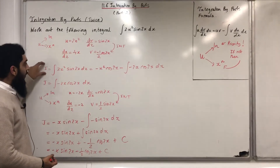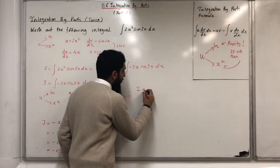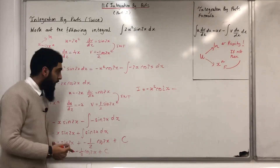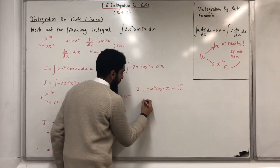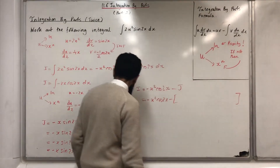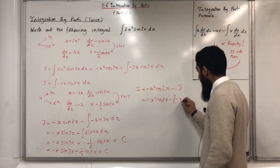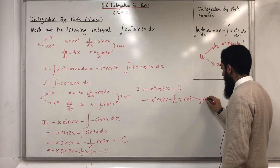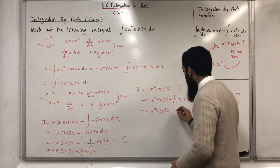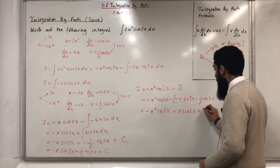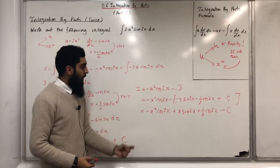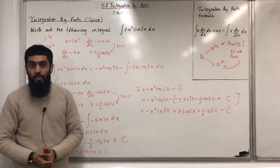I can go back to my expression for i, which is this over here. I can write i equals minus x squared cos 2x minus j. Substituting j in: minus x squared cos 2x minus, in square brackets, minus x sin 2x minus 1 over 2 cos 2x plus c. Expanding the bracket gives minus x squared cos 2x plus x sin 2x plus 1 half cos 2x minus c. That was my second example of using the integration by parts formula twice.